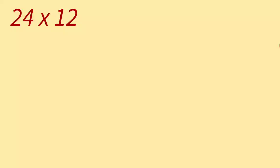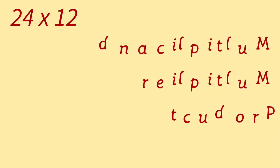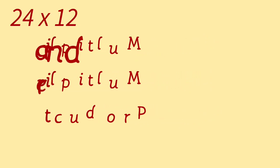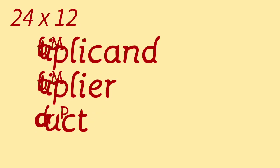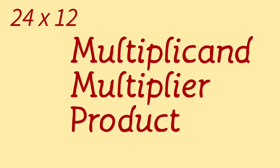In the chapter Multiplication 1, we learnt how to multiply a 2-digit number by a 1-digit number. We also learnt the terms related to multiplication. The terms are: multiplicand, multiplier, and the product. The number that needs to be multiplied is called the multiplicand. The number with which we multiply is called the multiplier. And the answer is called the product.